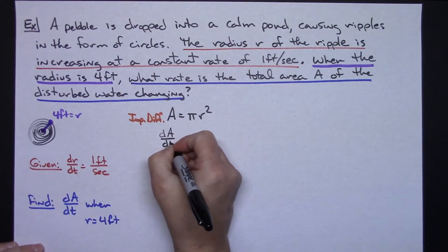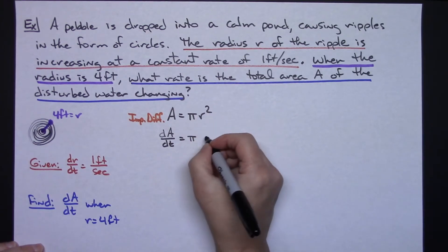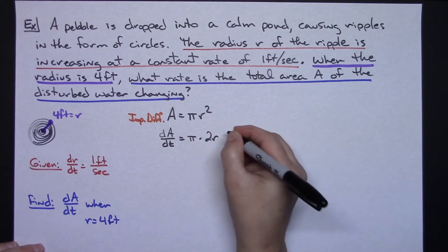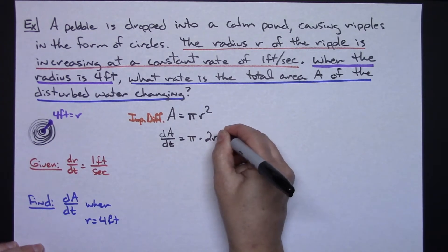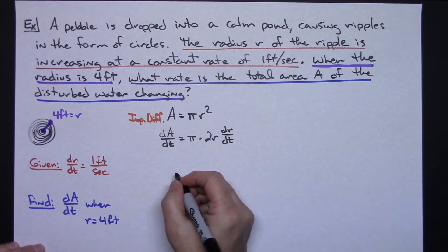I'm going to work on this r squared and that's going to be a 2r and then implicitly with respect to time means I have to have that chain rule in there so dr/dt. If you want to clean this up just a little bit before you plug in what you know you can.